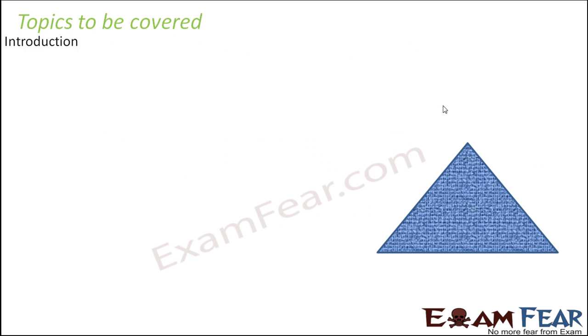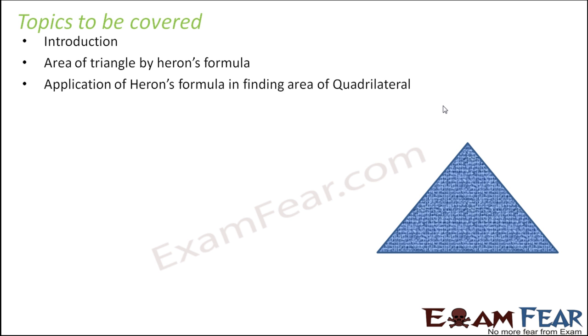The topics to be covered in this chapter are introduction. We'll try to find the area of triangle by using Heron's formula. We'll tell you what is Heron's formula. We'll see the application of Heron's formula in finding the area of quadrilateral. And then we'll go for a quick summary. A very short chapter where we'll see what is Heron's formula and the application of Heron's formula.